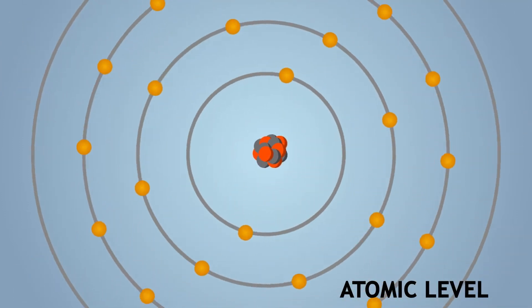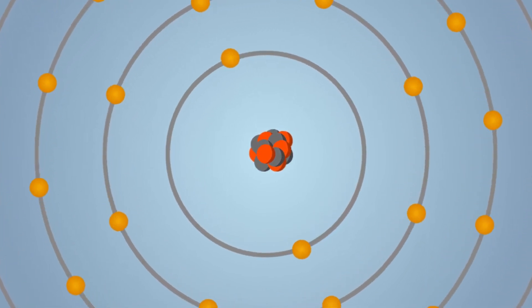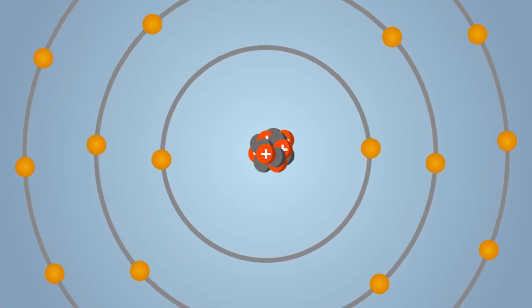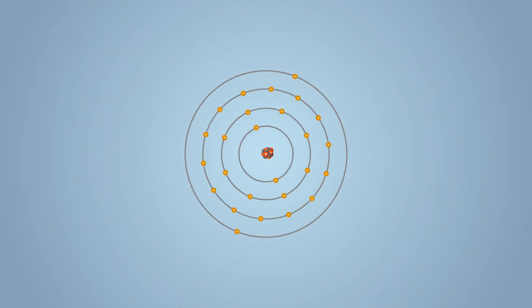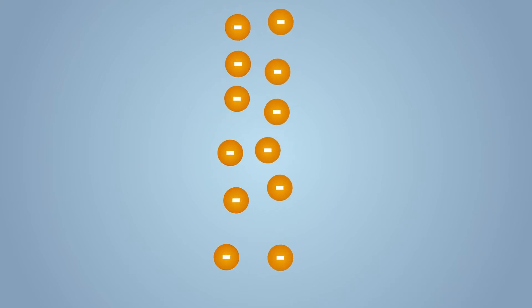The particles that compose atoms carry different electromagnetic charges. The protons in the nucleus are positive, while the surrounding electrons are negative. Different charges attract each other, but the same push each other away, powerfully.